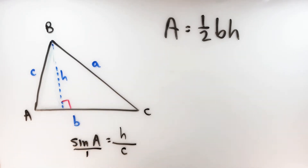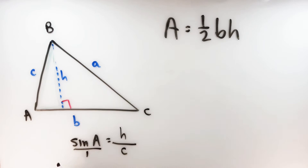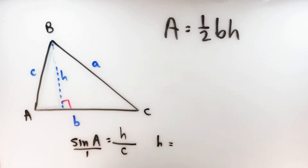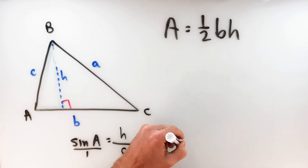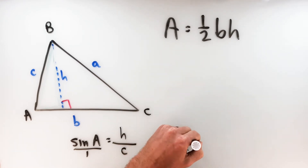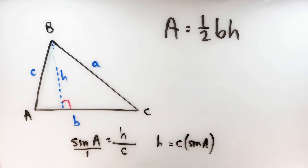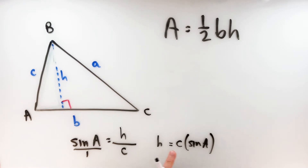Now, if I put sine(A) over one, I've created a proportion. With proportions, you can cross multiply to get an equivalent equation. So H times 1 is H, and C times sine(A) gives C·sin(A). So I can write the height of this triangle H as C times sine A.